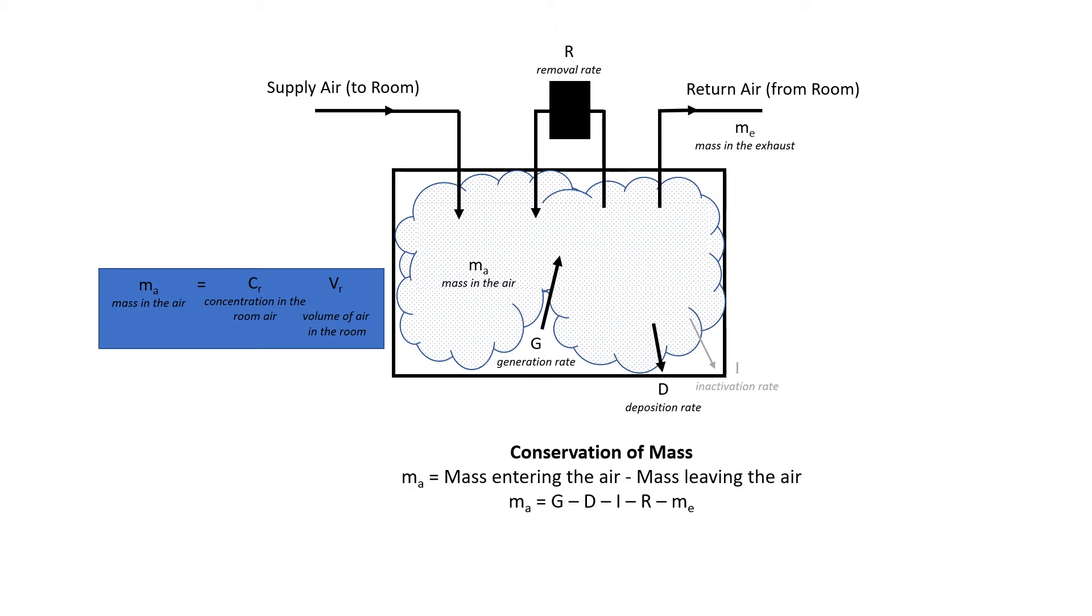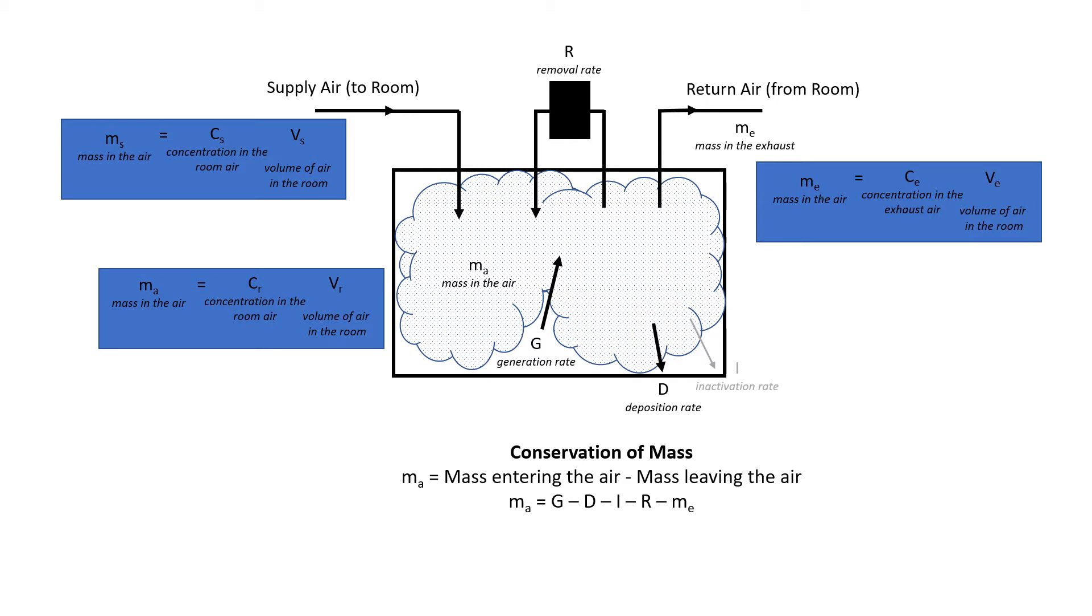We usually express these not in terms of the actual number of particles or the actual mass of particles in the room. We usually express it in a concentration. So it's going to be particles per meter cubed or micrograms per meter cubed or something like that. And so once we express them in terms of concentrations, we do that for the air flows as well, for the exhaust air and the supply air. That makes each component of this easy to express in terms of a volume or a volume flow and a concentration.